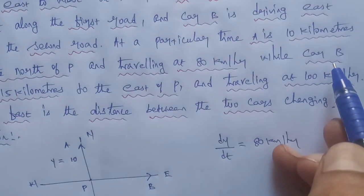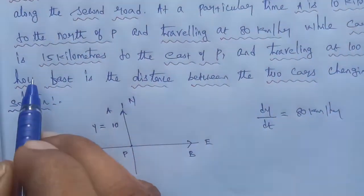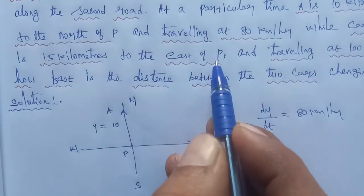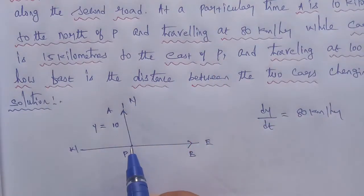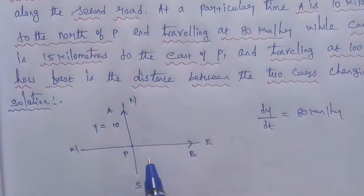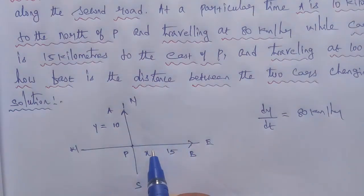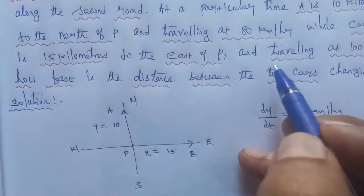Next, car B is 15 km to the east of point P. So from point P, distance is equal to 15 km.